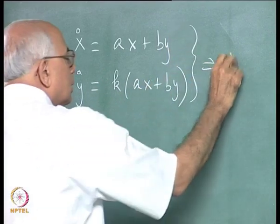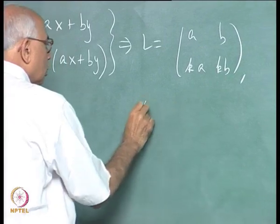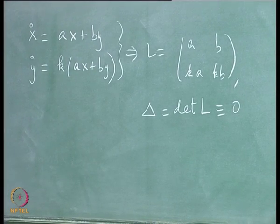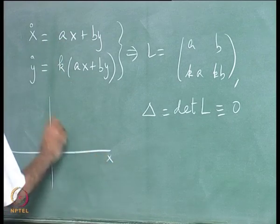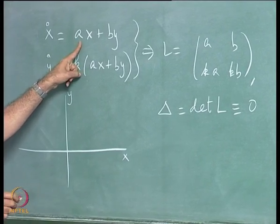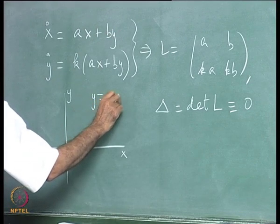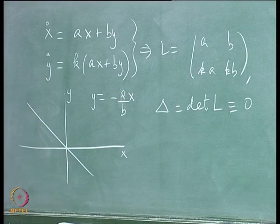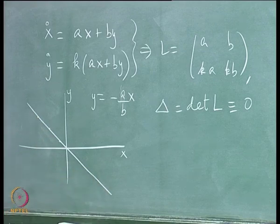This immediately implies that the matrix L is [a, b; ka, kb]. So delta, equal to the determinant of L, is identically zero. The question is what kind of critical points you get here. The answer is simple: you have a degenerate system — these two equations are not linearly independent. The locus of points where the right-hand sides are zero is ax plus by equal to zero, a straight line, and at every point on this critical line the system is in equilibrium — no time change at all.